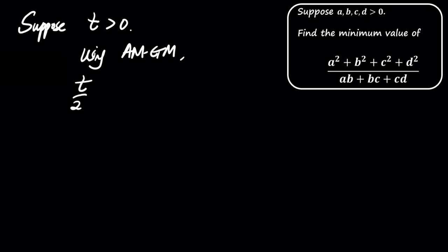t over 2 times a squared plus 1 over 2t times b squared is greater than or equal to ab. 1 over 2 times b squared plus 1 over 2 times c squared is greater than or equal to bc.